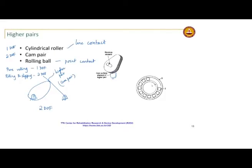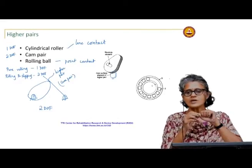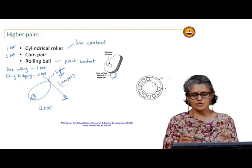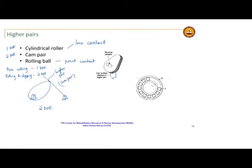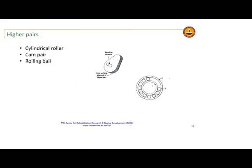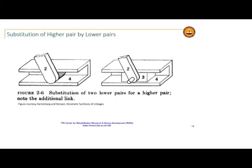An interesting case is a ball bearing: link 1, a set of balls moving in a race, and another element 3. The connection between 1 and 2 is a higher pair; between 2 and 3, rolling again — also a higher pair. But the overall joint between 1 and 3 is effectively just a revolute pair — you have to look at what motion is allowed between the links of interest. Sometimes you will substitute higher pairs by lower pairs.